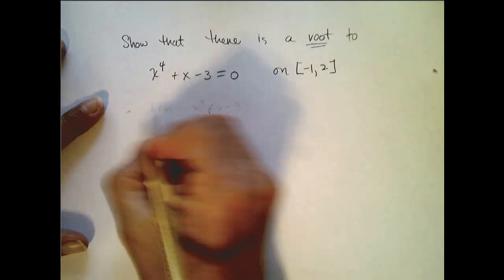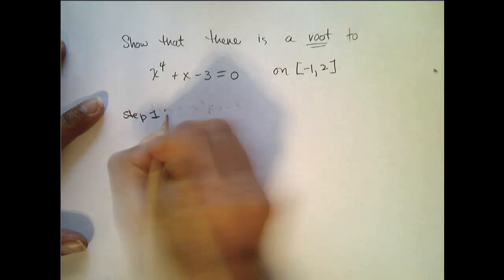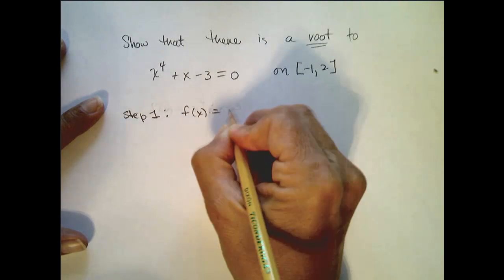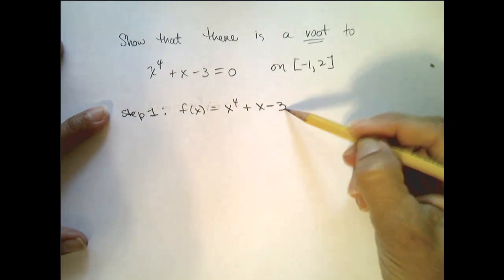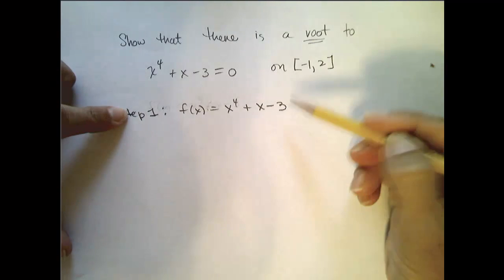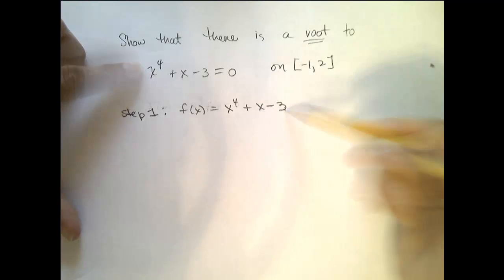The first thing I'm going to do, step 1, is I'm going to define the function f of x equal x to the fourth plus x minus 3. Now notice by doing that, finding the zeros of this function is the same as finding the roots of this equation.